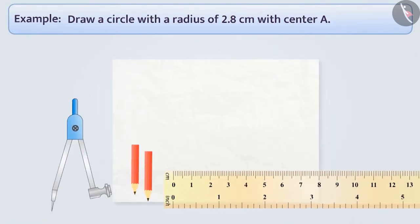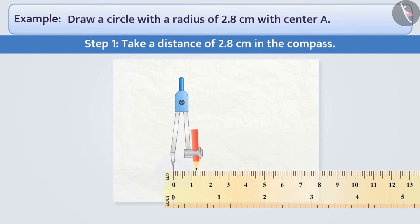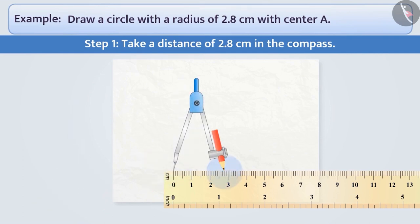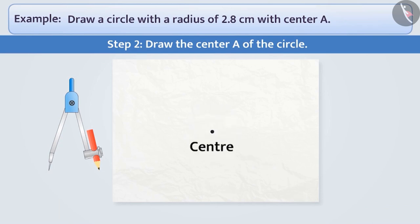First, we will attach a pointed pencil to the compass. Step 1: We will place the pointed end of the compass on the mark 0 of the ruler and open the compass for the required radius of 2.8 cm. Step 2: Using a sharp pencil, we will mark a point on the paper. This will be the centre of the circle and we name it A.